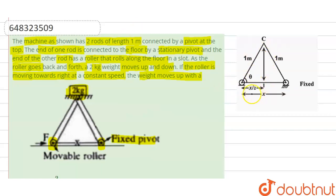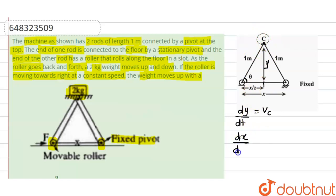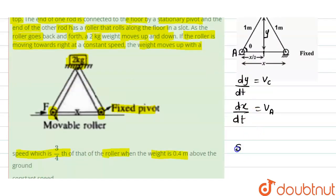We assume this horizontal distance is x, so the center point distance is x/2. The angle theta is between this roller and the weight — we call the weight point C. The vertical displacement of the weight is y, so dy/dt equals vc, the velocity of the 2 kg mass. We also have dx/dt equal to the speed of the roller, which we call va — so roller A has velocity va equal to dx/dt.